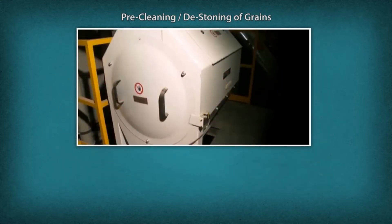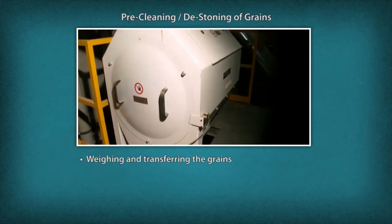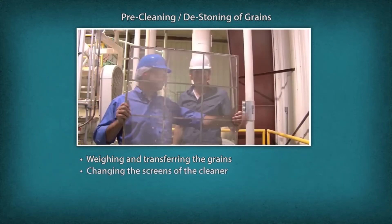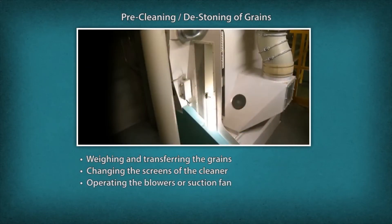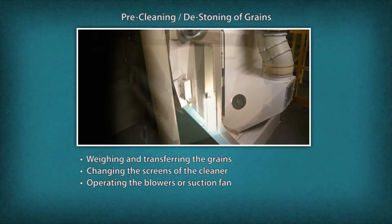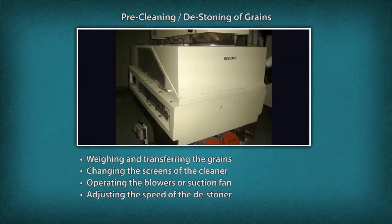A grain mill operator performs the following tasks at the pre-cleaning stage: Weigh the grains and transfer to the Rotary Screen Cleaner for cleaning. Change the screens of the Rotary Screen Cleaner. Operate the blowers or suction fan and set and maintain the speed of the cleaner. Adjust the speed of the de-stoner.